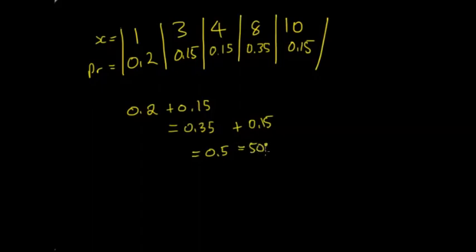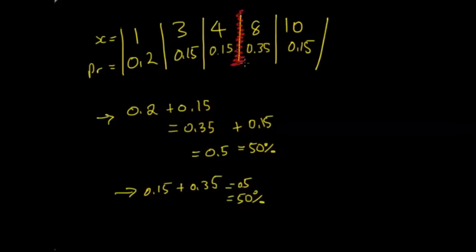So it equals 50%. From the other side, there's 0.15 plus 0.35, which equals 0.5, which equals 50%. Now if we picked exactly 4 or exactly 8, it's not exactly in the middle because once we pick that number, that probability isn't included. So it's between 4 and 8.